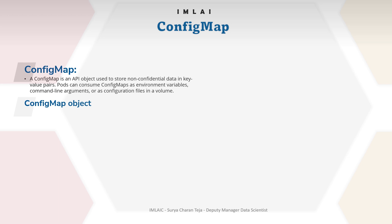That's the main motivation for bringing up a ConfigMap in Kubernetes. A ConfigMap object is an API object that lets you store configuration for other objects to use. Unlike most Kubernetes objects that have a spec, a ConfigMap has data and binary data fields — note this down. These fields accept key-value pairs. The data field is designed to contain UTF-8 strings, while the binary data field is designed to contain binary data as base64-encoded strings. Both fields are optional.